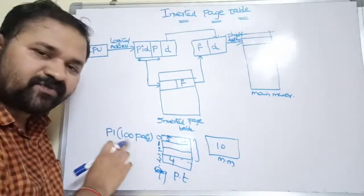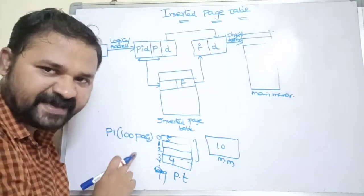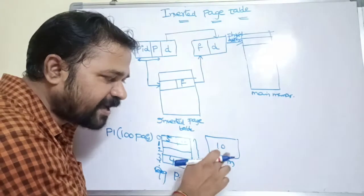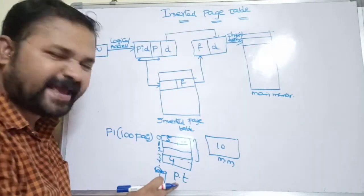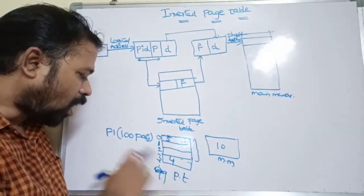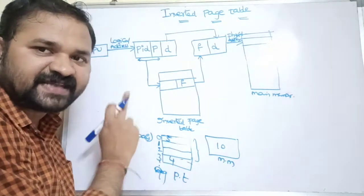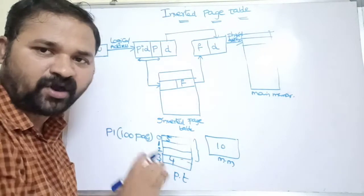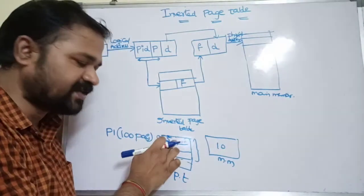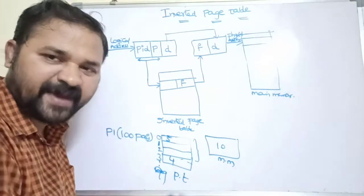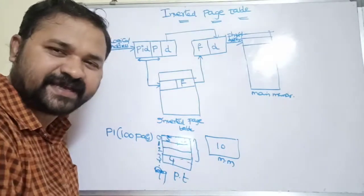So what is the problem here? The size of process P1 is 100 pages, whereas main memory contains only 10 pages. Even so, the page table contains all 100 pages' information — whether that page resides in main memory or not. If the page resides in main memory, the page table provides the frame number. If the page does not reside in main memory, it doesn't provide any information.